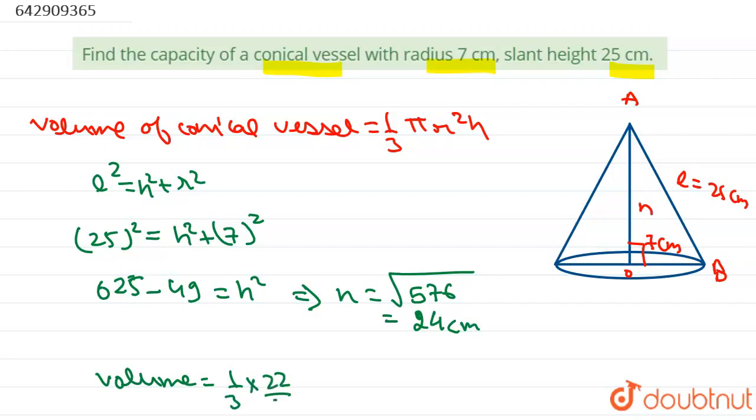Pi equals 22 by 7, R is given as 7 times 7, R squared, times H which is 24. 7 and 7 cancel. The volume is 1232 centimeter cube.